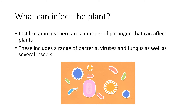So what can affect a plant? Well, just like animals, any pathogen can infect a plant. Bacteria, viruses, or fungi are all perfectly capable of infecting plants. There are also a number of insect species that would have a serious impact on a plant.